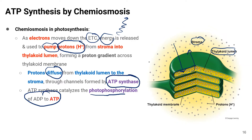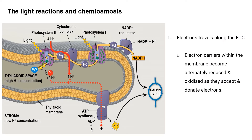Why is it called photophosphorylation? Because the synthesis of ATP is coupled to electrons that were energized by light energy from the sun. This is also a detailed look at electron transport and chemiosmosis.